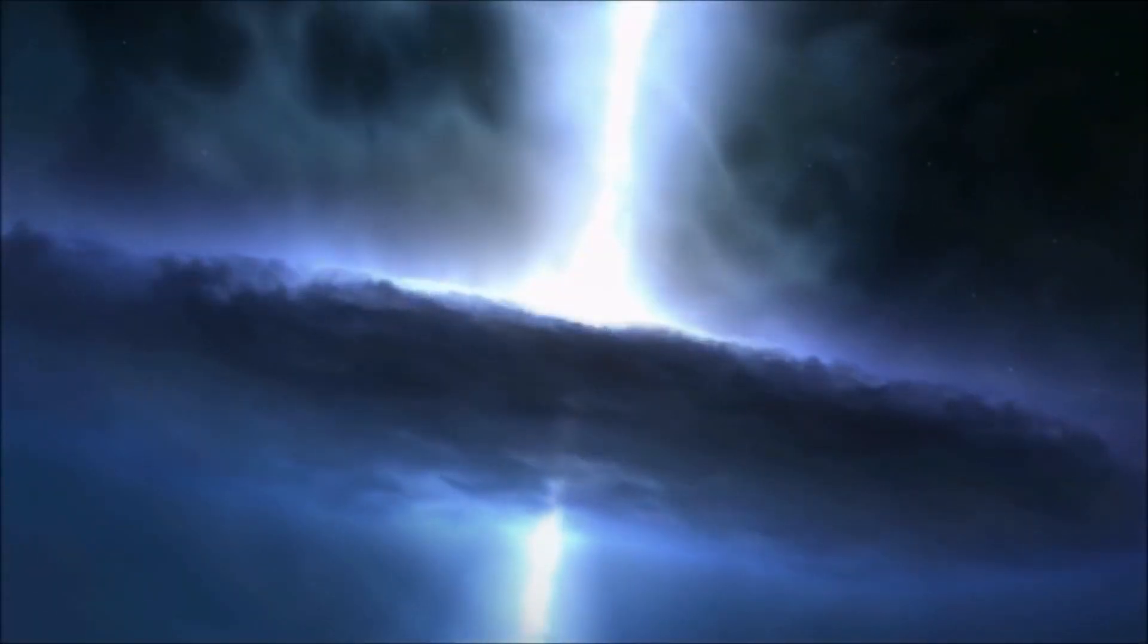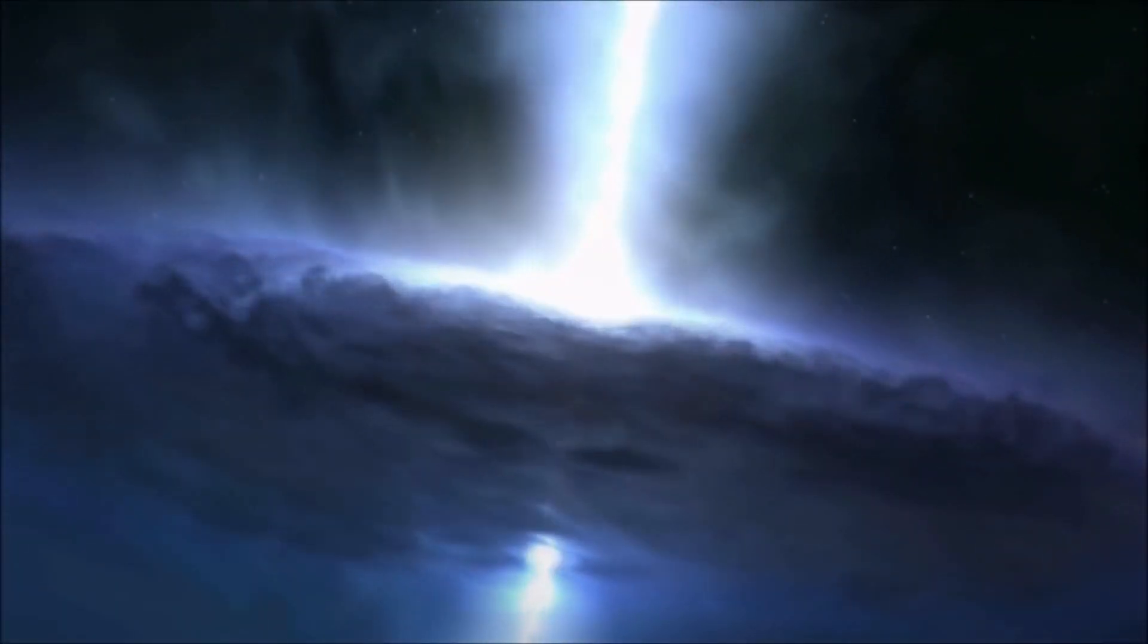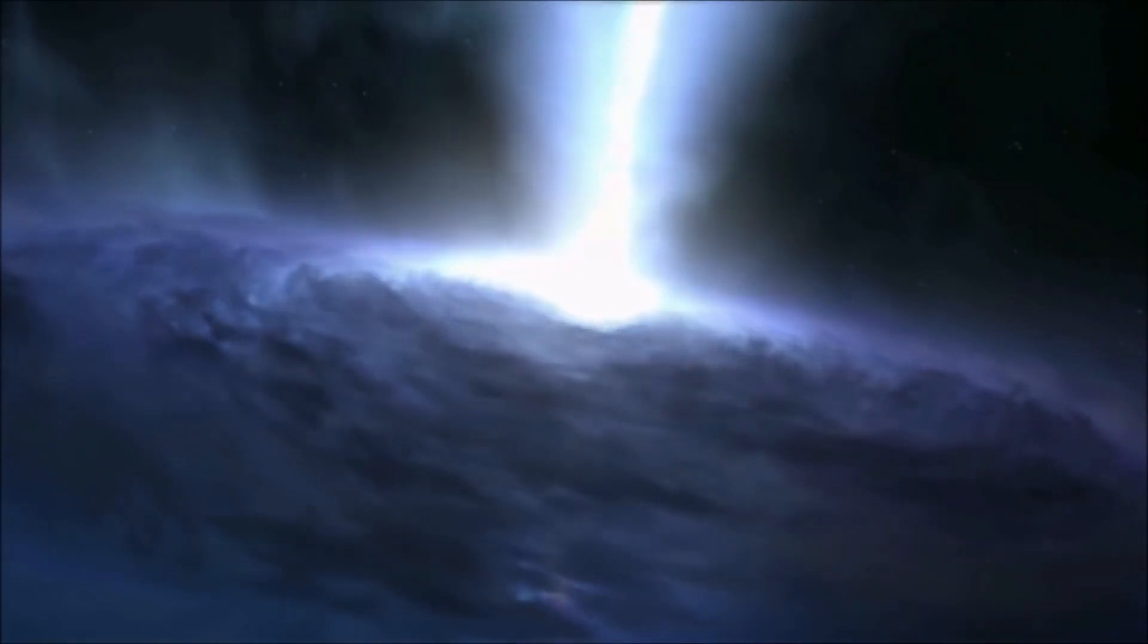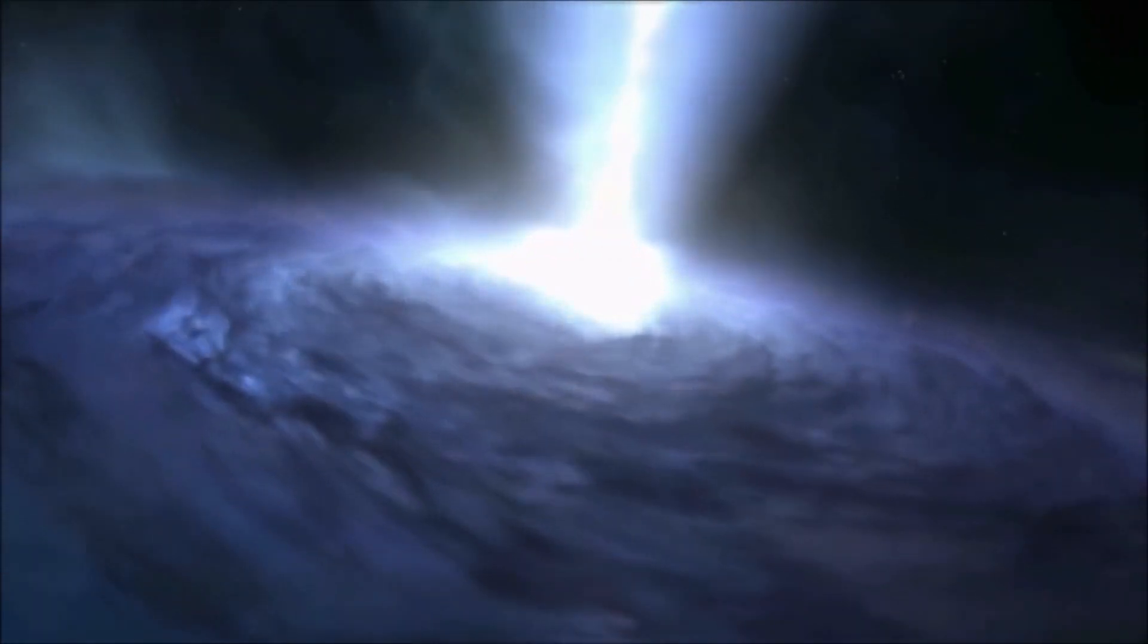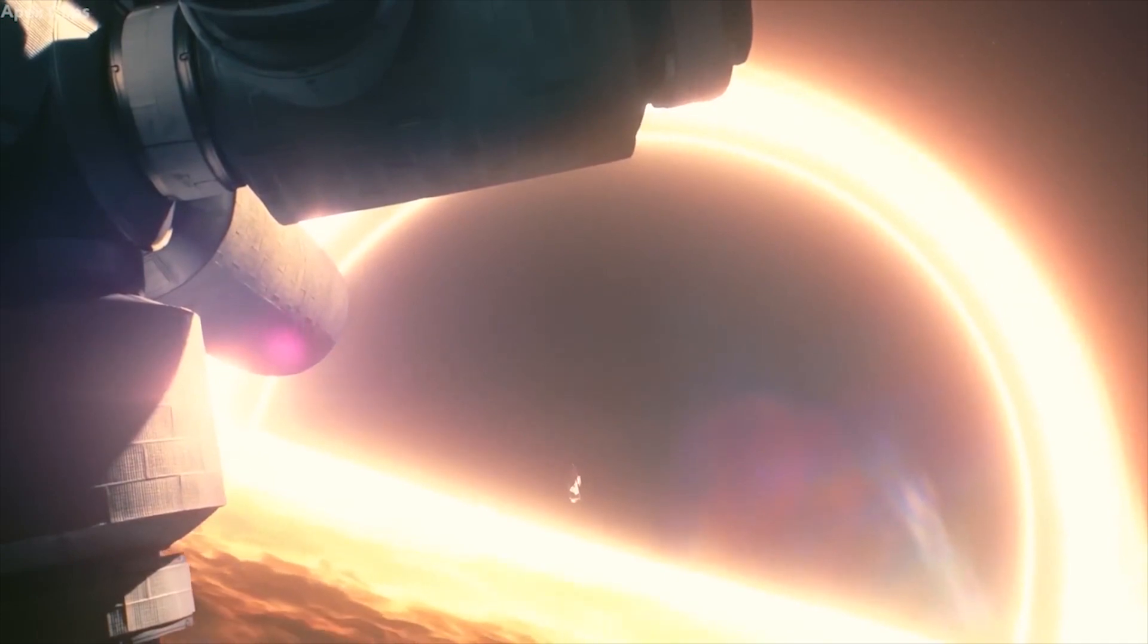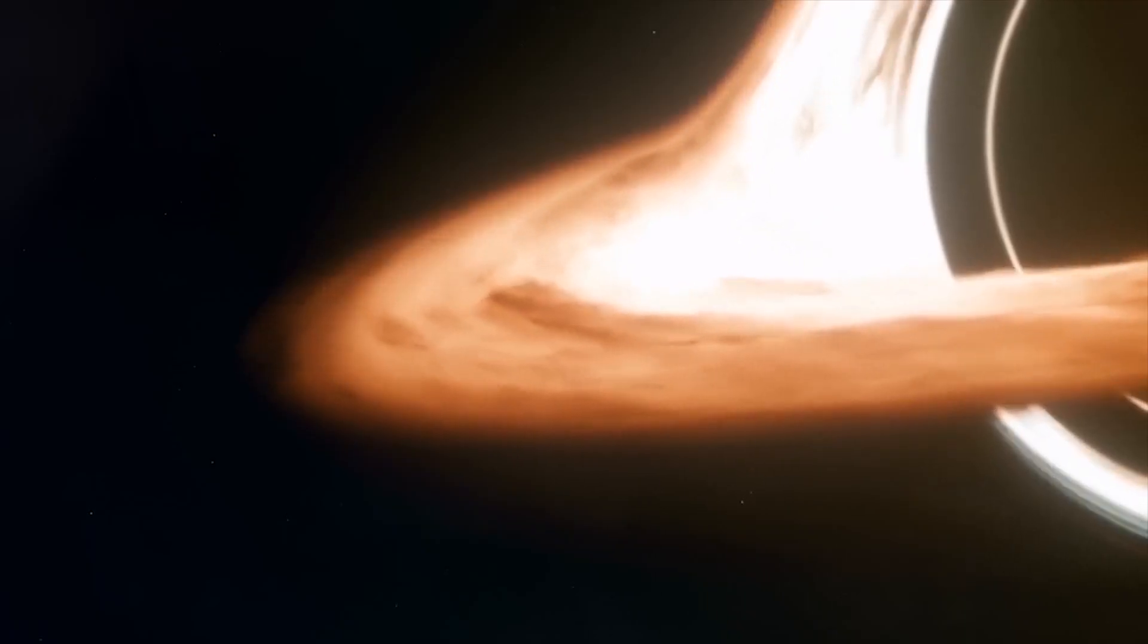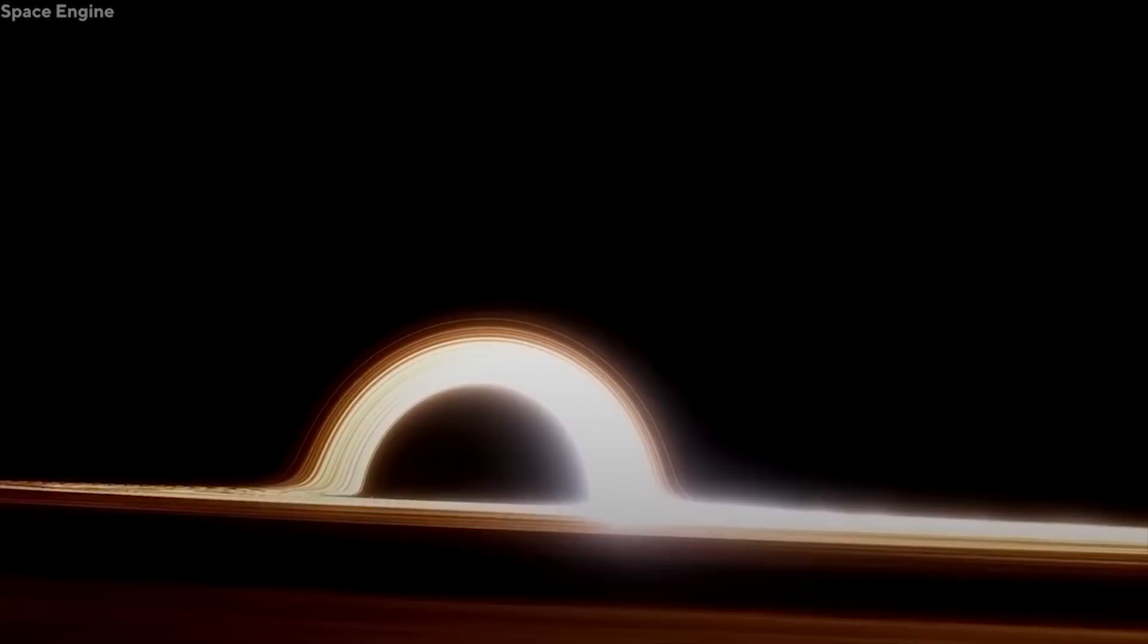As the star's core collapsed, it released an enormous amount of energy in the form of a supernova explosion. This cataclysmic event ejected the outer layers of the star into space, while the core imploded, leaving behind the black hole. TON 618's formation resulted from the remnants of this colossal star collapsing into a singularity, surrounded by its event horizon.